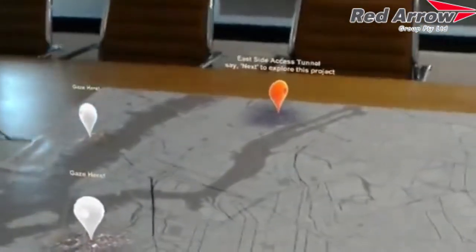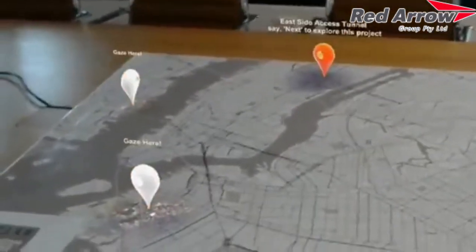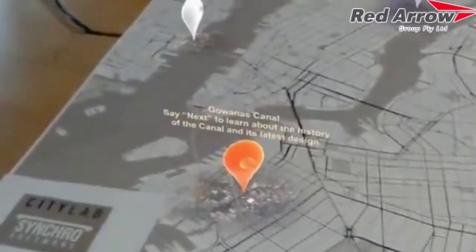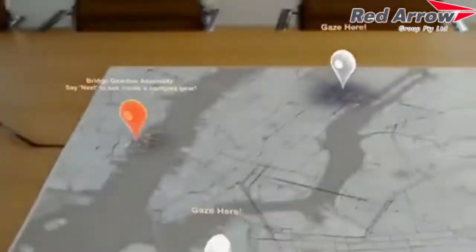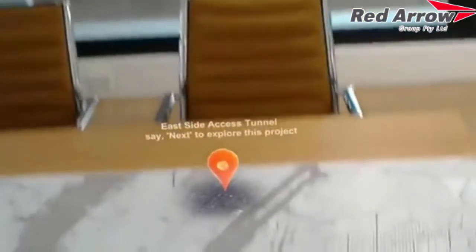The map has now been overlaid with the three beacon points that we can view as a project. When we look at each one and gaze upon it, we can then pick the section that we want to look at.